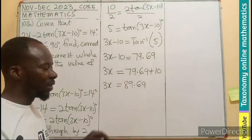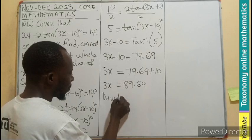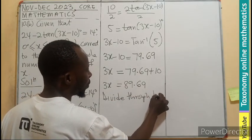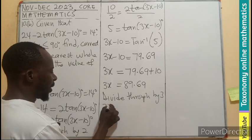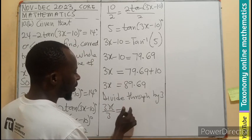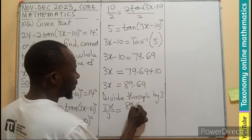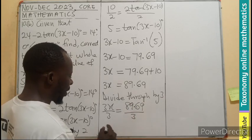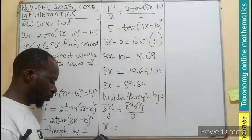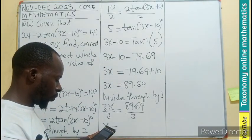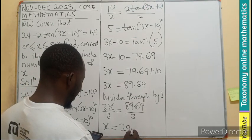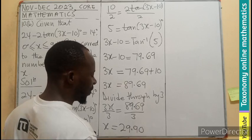So if you fast forward adding 10 to this will give you 89.69. But what are we going to do for the x? So we divide by 3. Meaning 3x over 3, 89.69 over 3. x will be equal to 29.90.